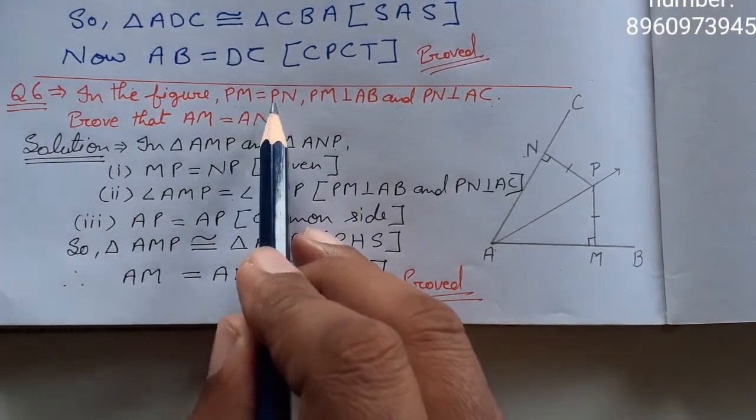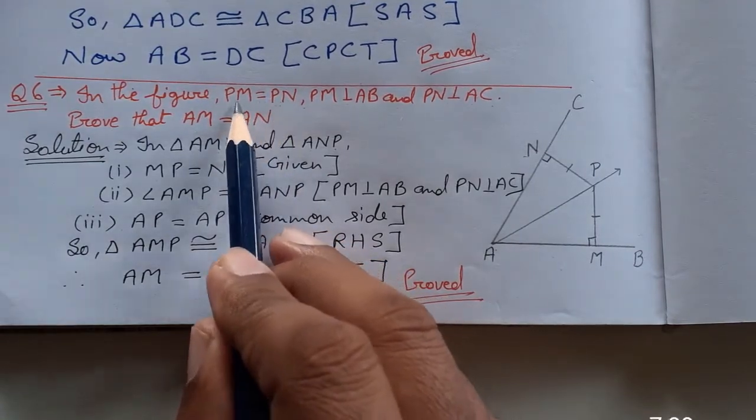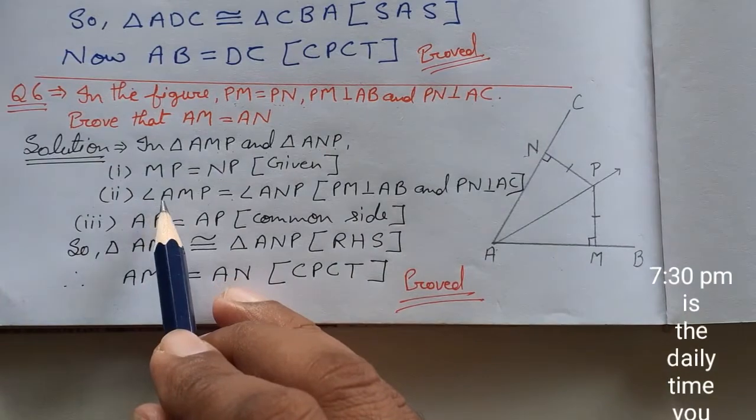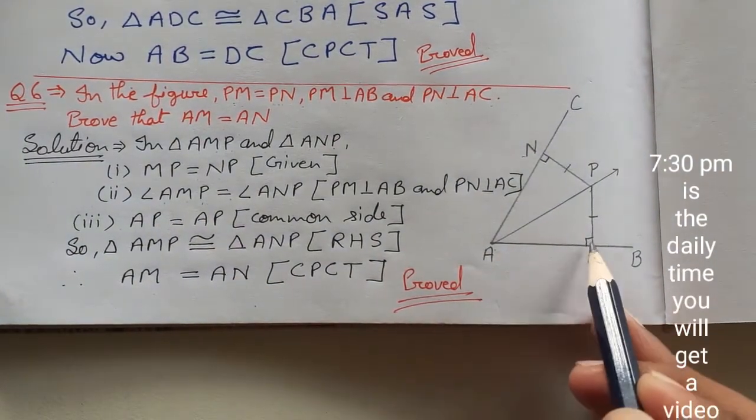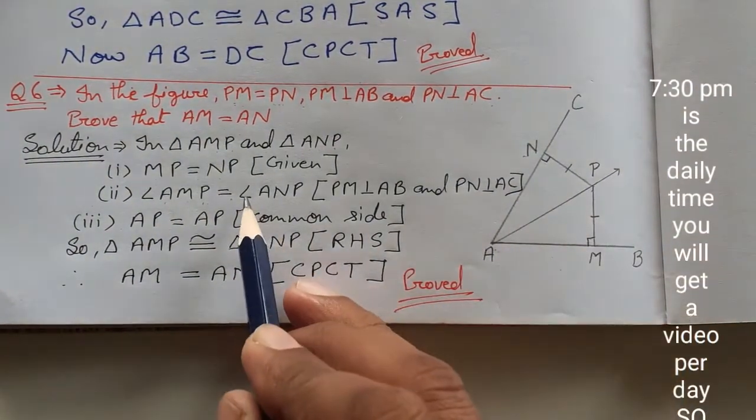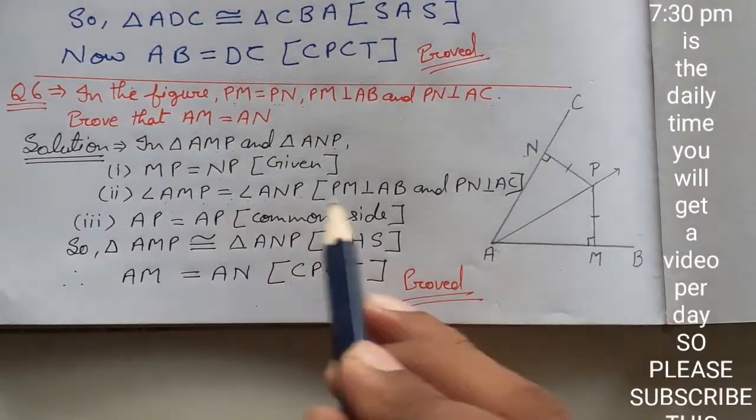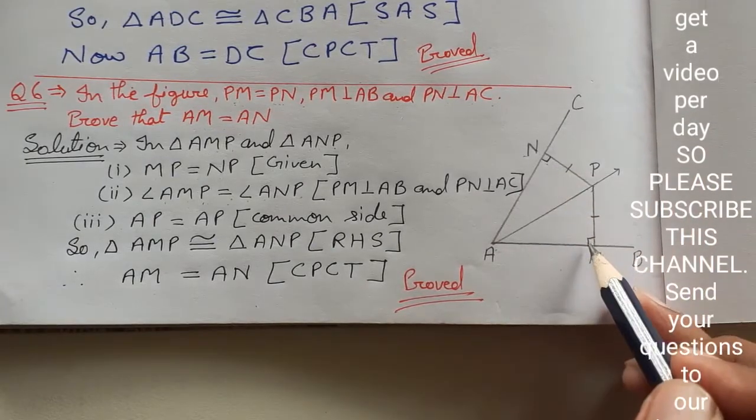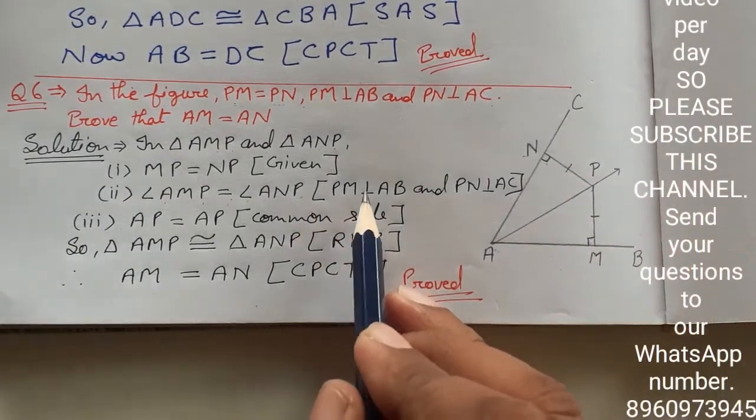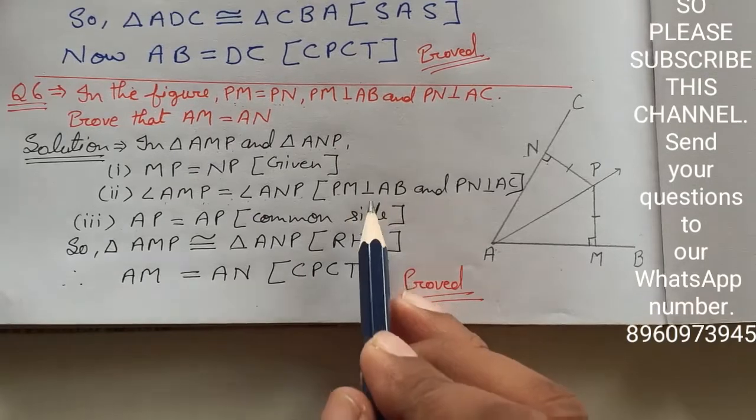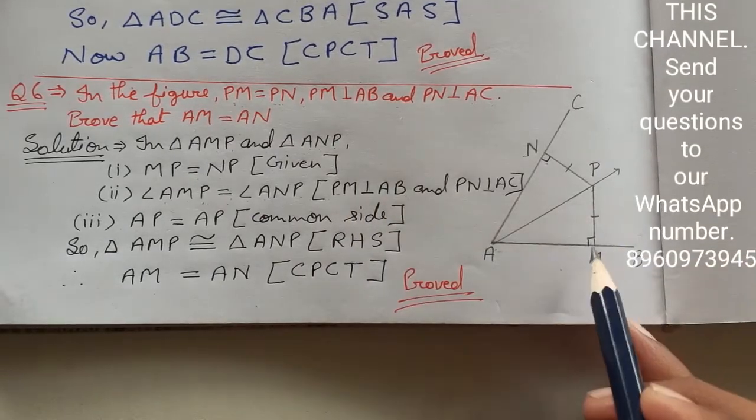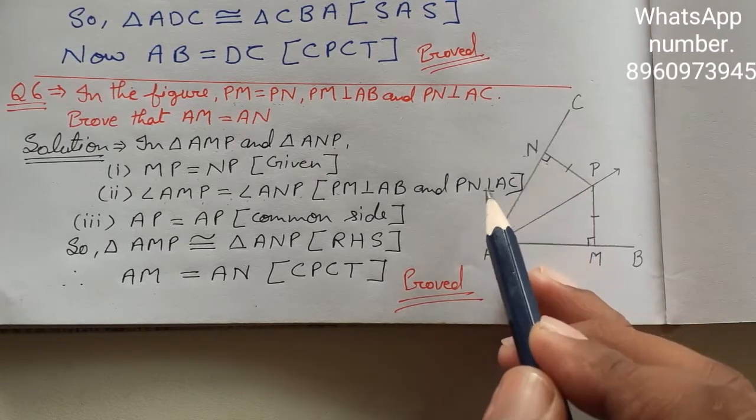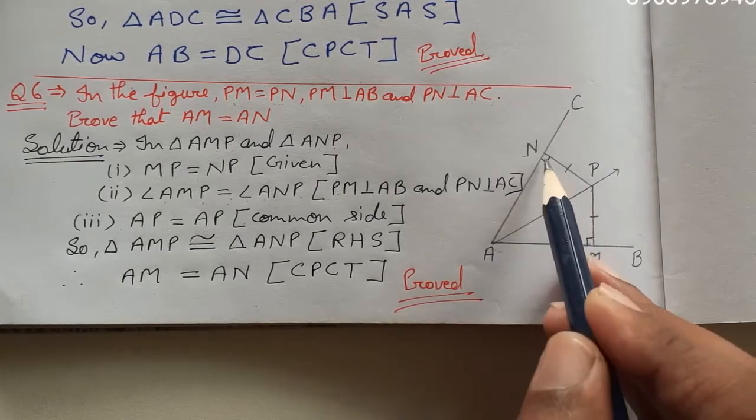Second point will be angle AMP equals angle ANP. Since PM is perpendicular to AB and PN is perpendicular to AC, both these angles are 90 degrees.